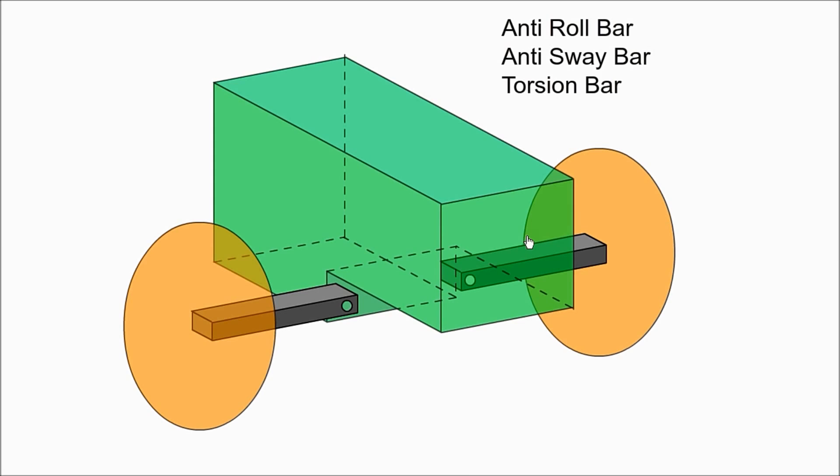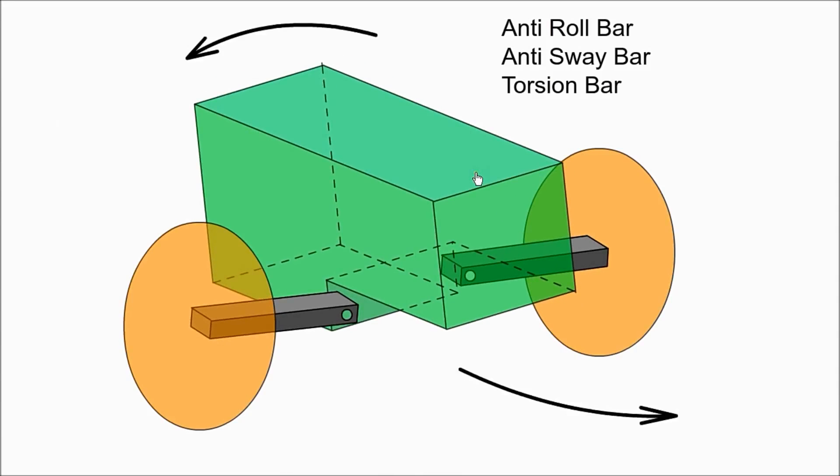When a car corners, the body tends to roll or sway. In this demo we have omitted the springs and dampers for clarity.